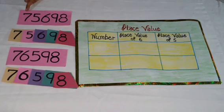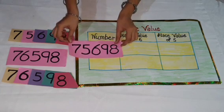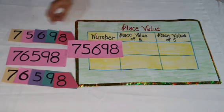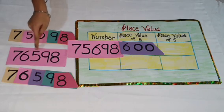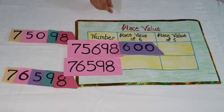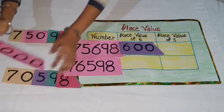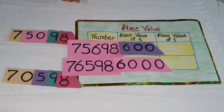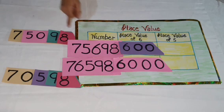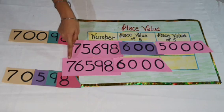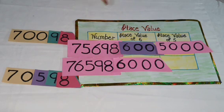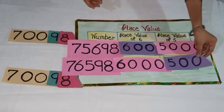Let's see the change using a place value chart. In the first number, 75,698, the place value of 6 is 600. In the second number, 76,598, the place value of 6 is 6,000. In the first number, 75,698, the place value of 5 is 5,000. In the second number, 76,598, the place value of 5 is 500.